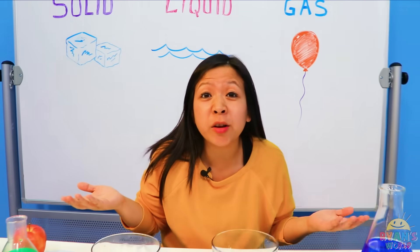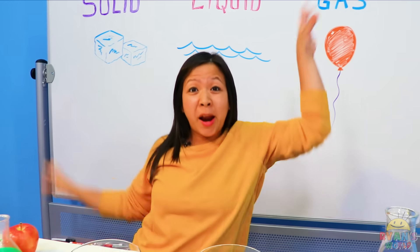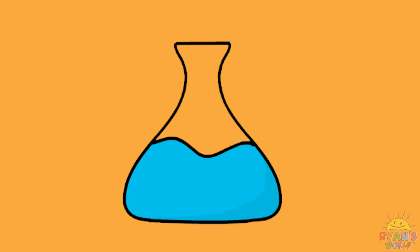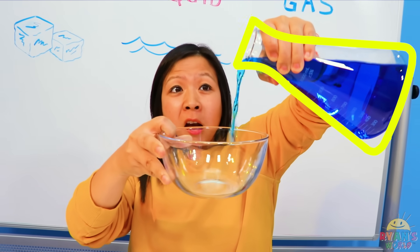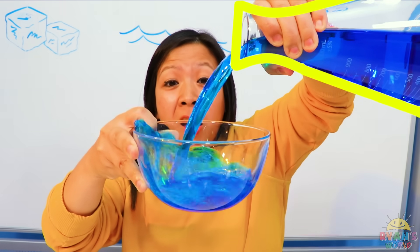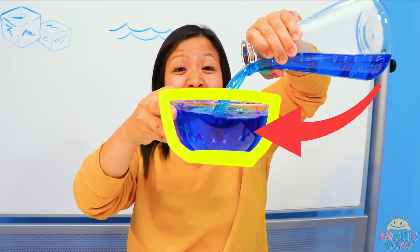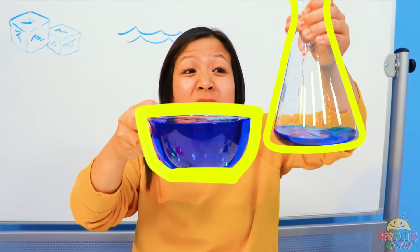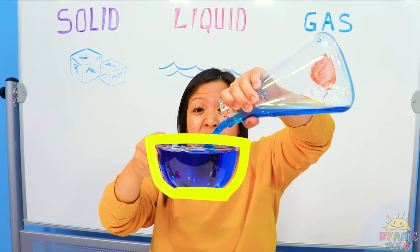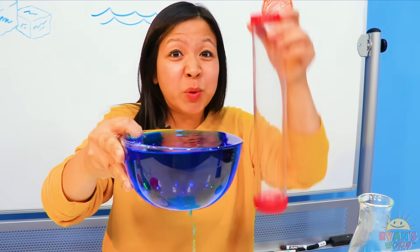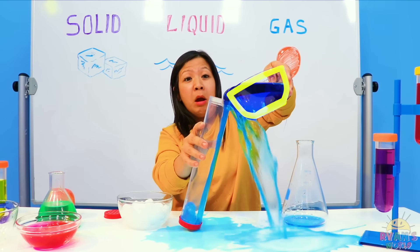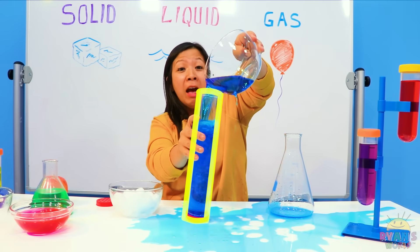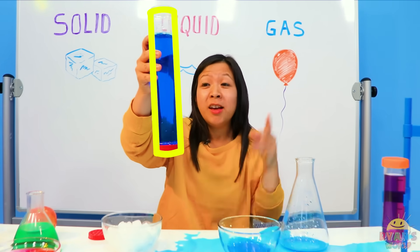Liquids, however, have particles that are free to move around. It keeps the same volume but different shapes. For example, this liquid here — look what happens. See, it keeps the shape of the container, but it's the same amount of volume. Now let's put the liquid into a different shaped container. This is the shape of a bowl, and now this is the shape of this cylinder.